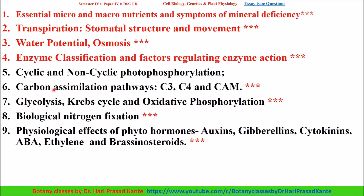Photosynthesis processes including carbon assimilation — C3, C4, and CAM pathways. Next: respiration — glycolysis, Krebs cycle, and oxidative phosphorylation. Next: biological nitrogen fixation — another important question. Next: physiological effects of phytohormones — auxins, gibberellins, cytokinins, abscisic acid, ethylene, and brassinosteroids.